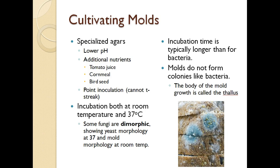In the laboratory, you're going to be given a piece of cheese — Shropshire, blue cheese, or perhaps Stilton. You'll see veins in these cheeses, and from that you are going to be cultivating molds. Molds require specialized agars that tend to have a lower pH because molds like things a little more acidic, and additional nutrients such as tomato juice, cornmeal, or bird seed. We don't T-streak molds because their spores go everywhere. Instead, we do a point inoculation, and from that the fungal colony, or thallus, grows outward in a circle.